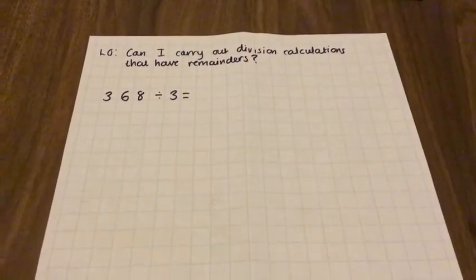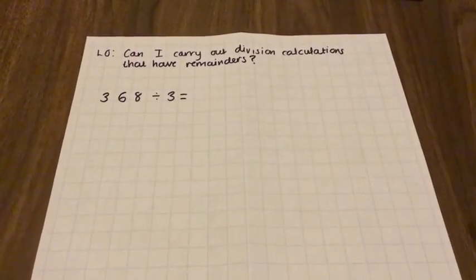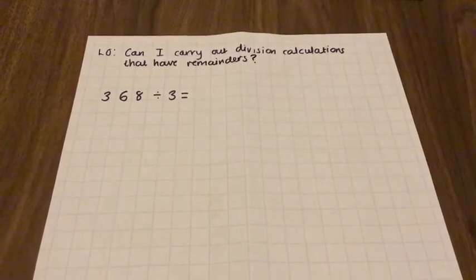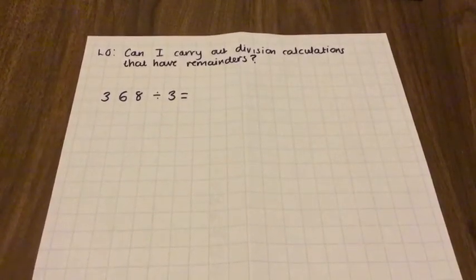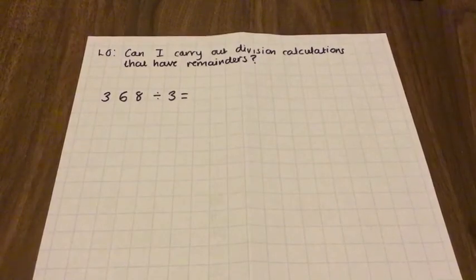In our last division video, we looked at using the bus stop method to divide numbers. In this video, we're going to move it on a step further. We're going to look at division sums that have remainders. Remainders are when you can't divide a number exactly, so you end up with some leftover numbers at the end of the calculation. Let's have a look at this.